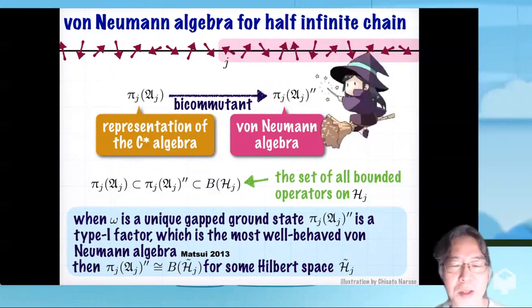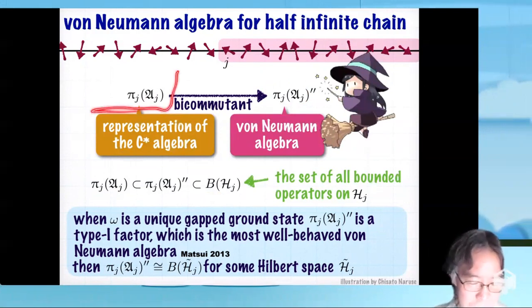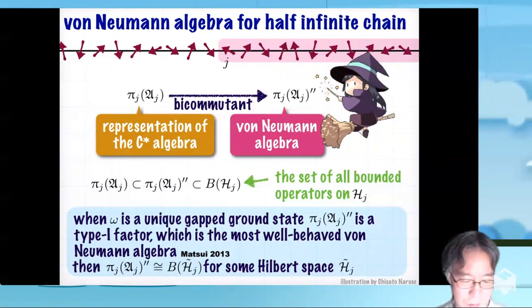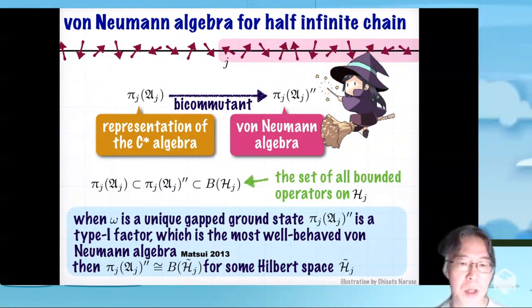You get some slightly larger object again within this, and it's von Neumann algebra. This is the magical part. You know, C* algebra, this one is not very difficult, probably you can study. But to understand this part, you have to go through a textbook on operator algebra. But anyway, we have this, it's well defined.